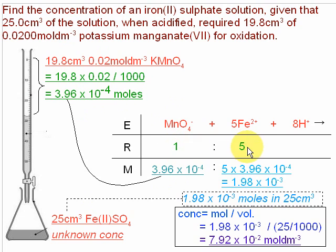I'm then going to multiply that by 5 to give the amount of Fe2+. That amount of Fe2+ is in 25 cm³.